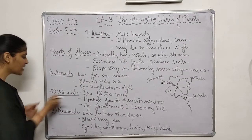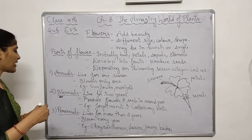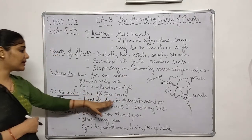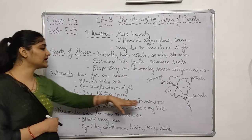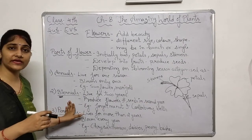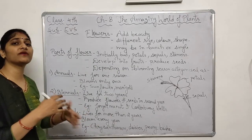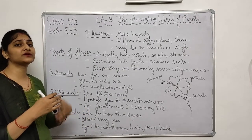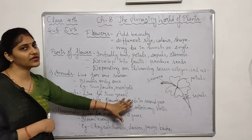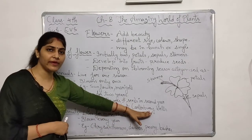Biennial plants — 'bi' means two — so these plants live for two years. In the first year the plant grows, and the flowers come only in the second year. After producing seeds in the second year, the plant then dies. Examples are forget-me-not and Canterbury bells.